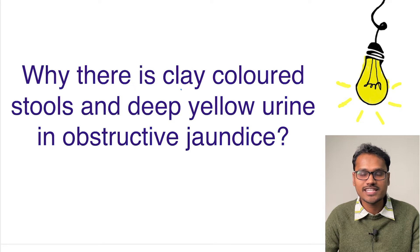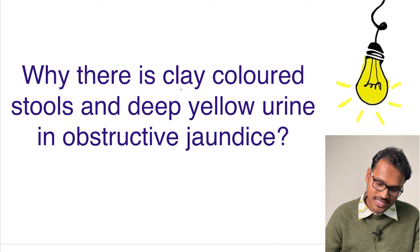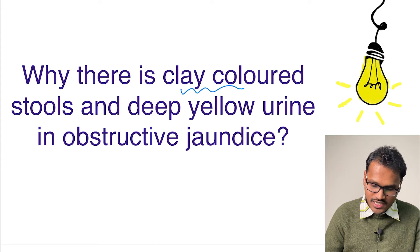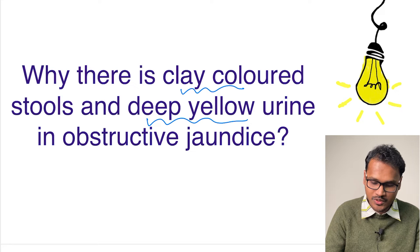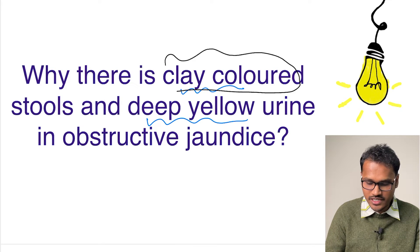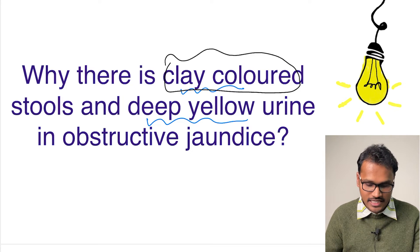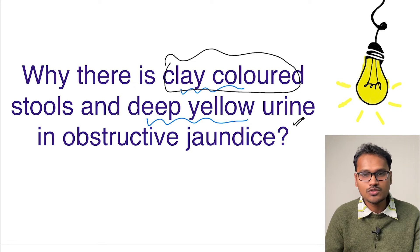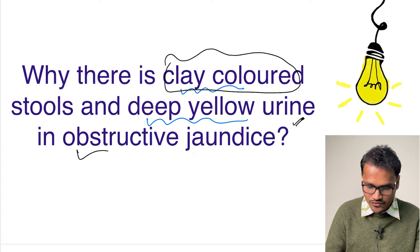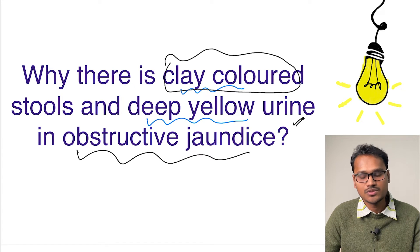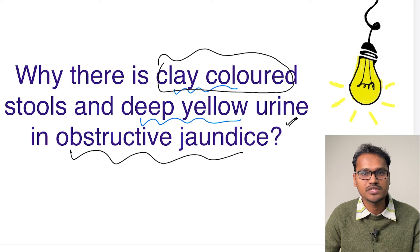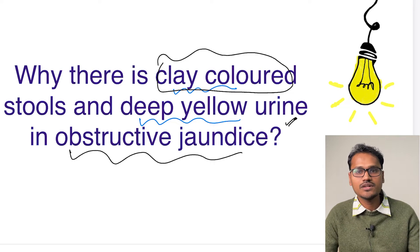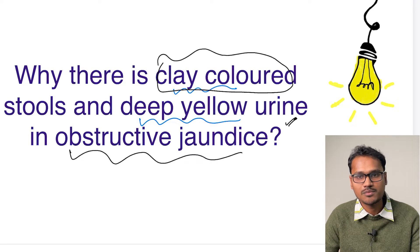Hello everyone. In today's 'Explain Why' series, we are going to understand why there is clay-colored stool and deep yellow colored urine. These are two clinical features — when they give a history, they will tell you the child is passing clay-colored stool and there is deep yellow colored urine, and this could point towards the diagnosis of obstructive jaundice. These are some classical features in obstructive jaundice.